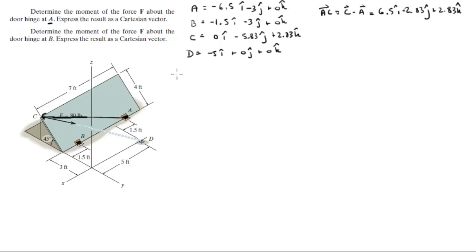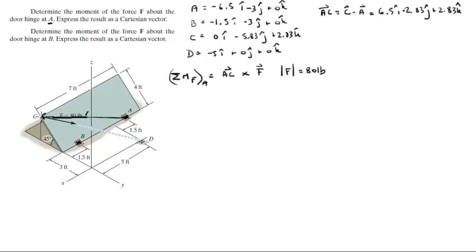Now that we have that vector, the moment that F creates about A is given by the cross product of AC cross the Cartesian vector form of F. We have the magnitude of F which is 80 pounds. The force goes in the direction from C to D, because the force is created by a chain, so we find vector CD. Vector CD equals D minus C, which is negative 5i plus 5.83j minus 2.83k.